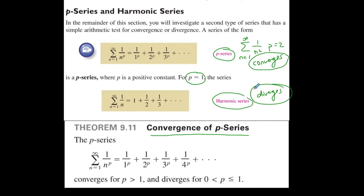The harmonic series always diverges because it is the special form of a p-series where p is equal to 1. The summation from 1 to infinity of 1 over n to the p is a p-series. If a series follows that form, we can determine convergence or divergence; otherwise, you have to use other methods.